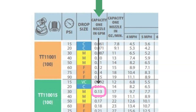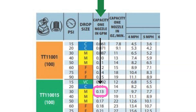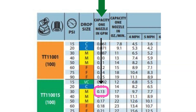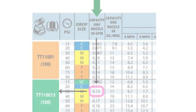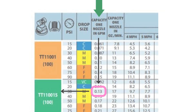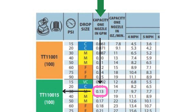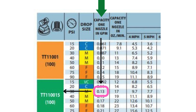In this chart you can see that the nozzle capacity is displayed in the column marked with the green arrow. This is where we can look for a nozzle that produces this flow rate. In the pink rectangle you can see that the green nozzle produces 0.3 gpm at 30 psi.